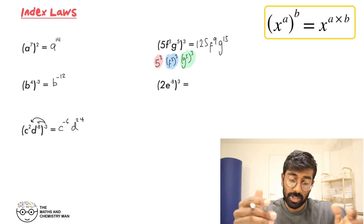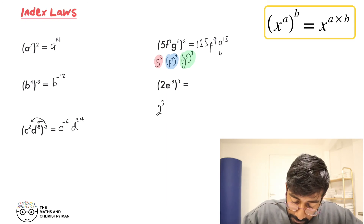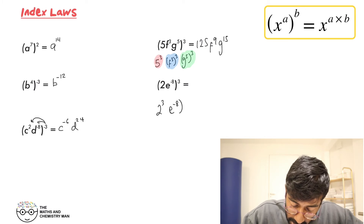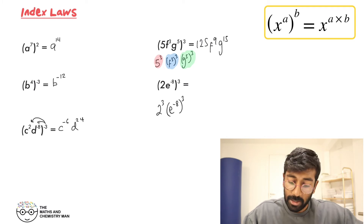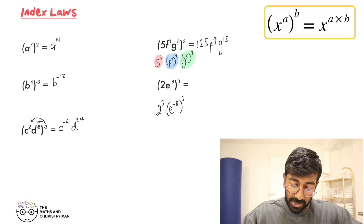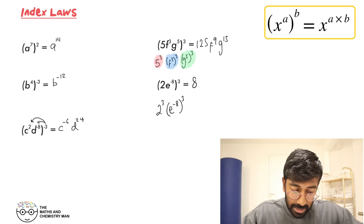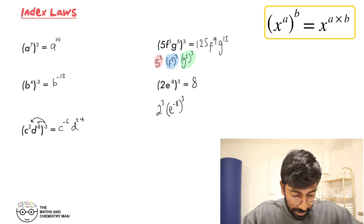Similar idea for the next one. Split it up: 2 to the power of 3, and then E to the minus 8 cubed. Work out each bit individually: 2 to the 3 is 8.